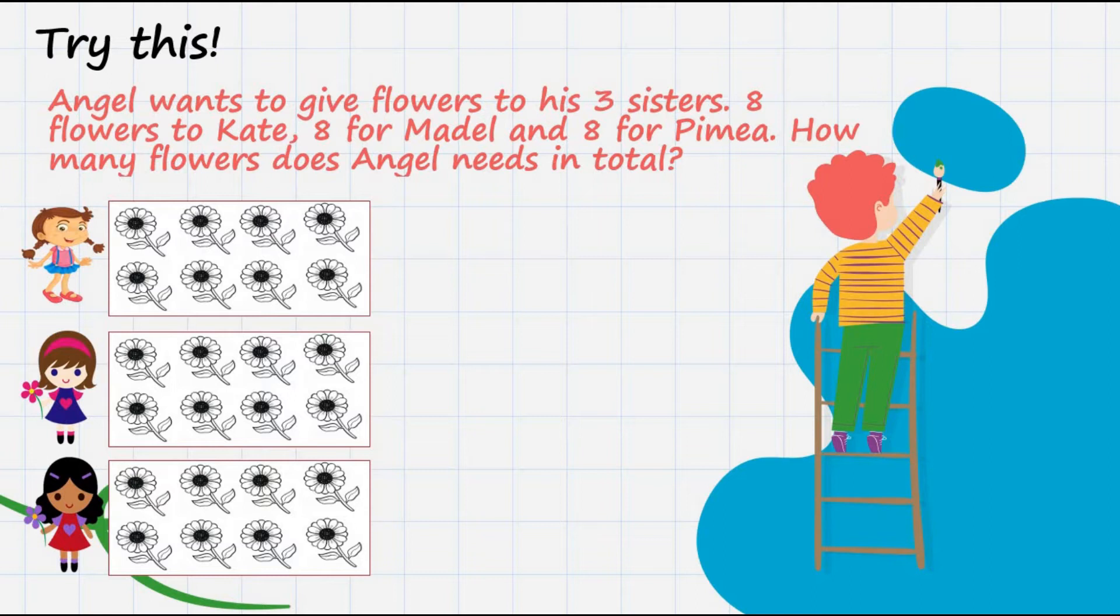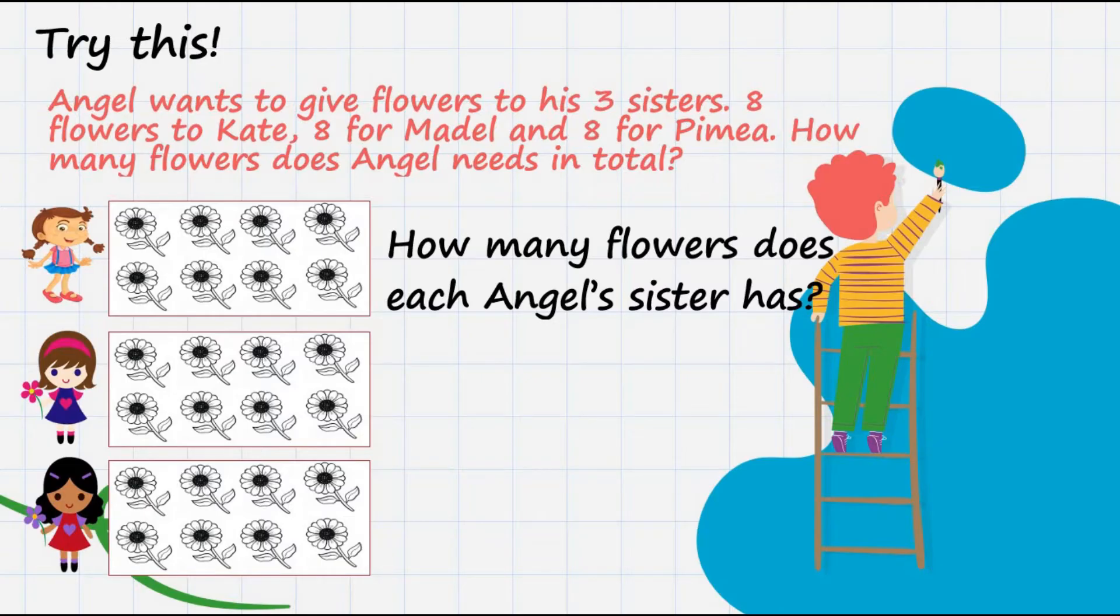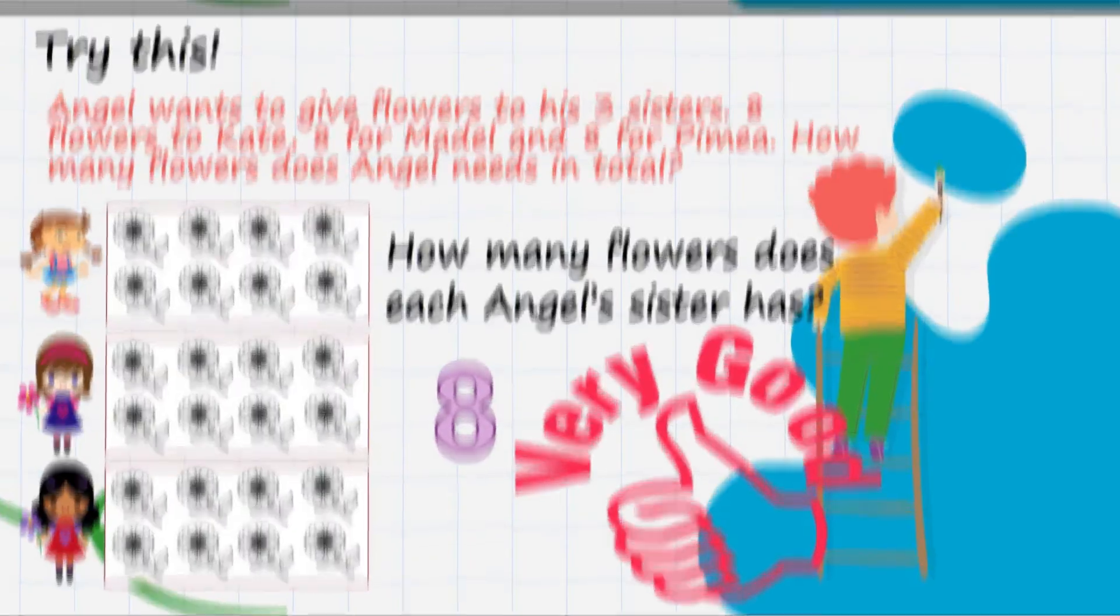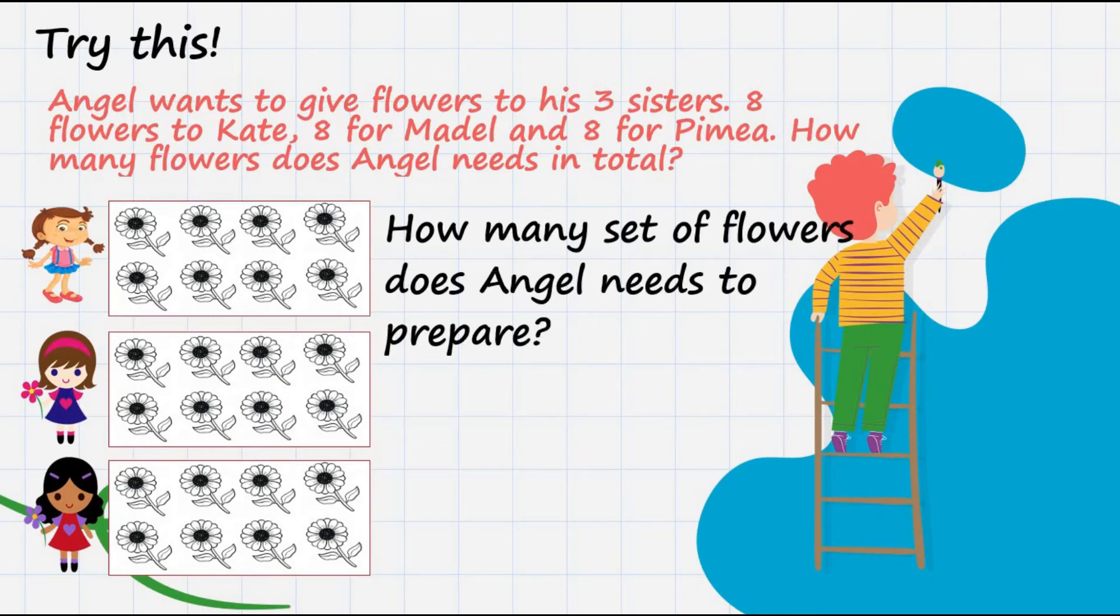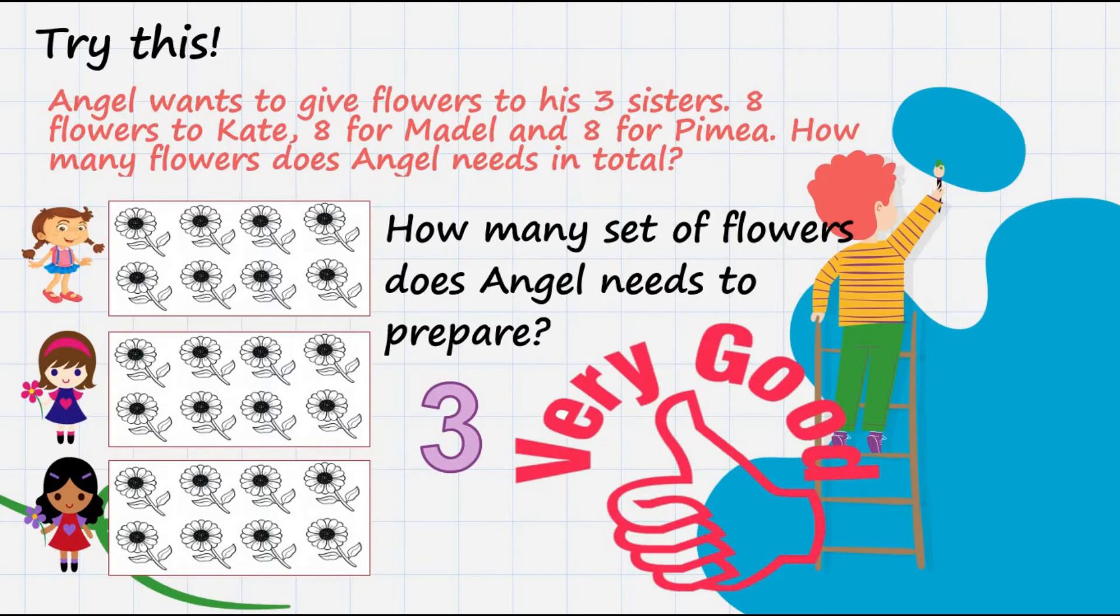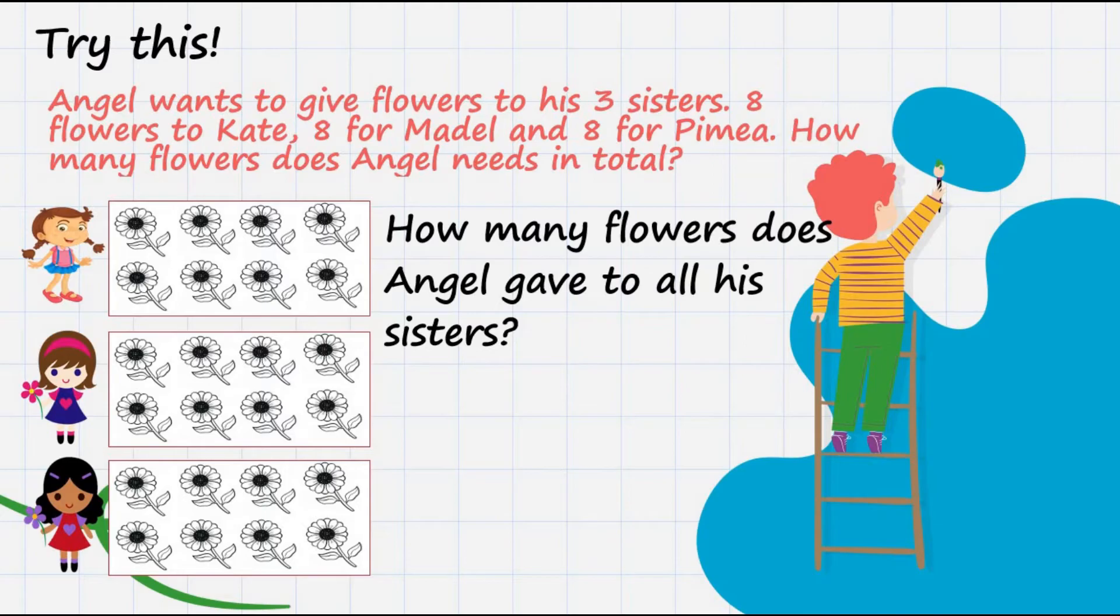Let us answer the following questions. First question: How many flowers does each Angel's sister have? Excellent. Each sister has 8 flowers. Next question: How many sets of flowers does Angel need to prepare? Three. Very good.